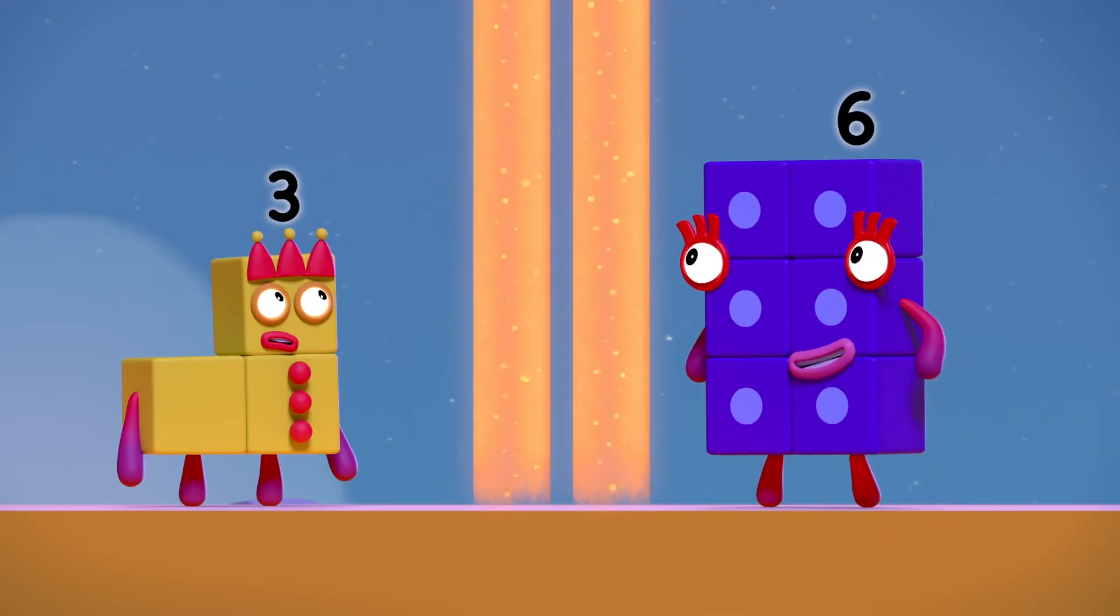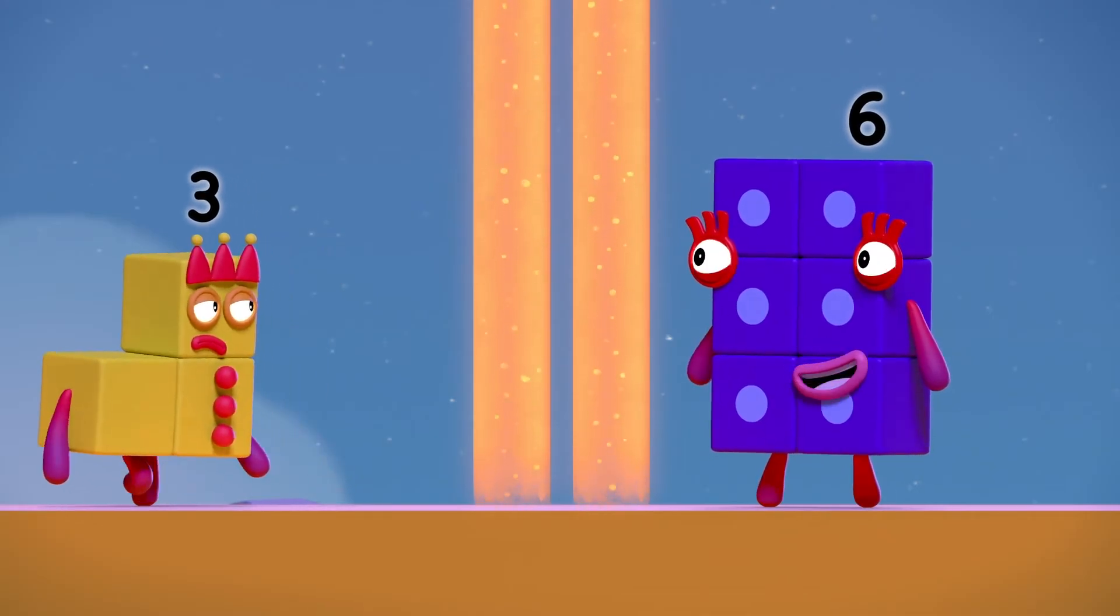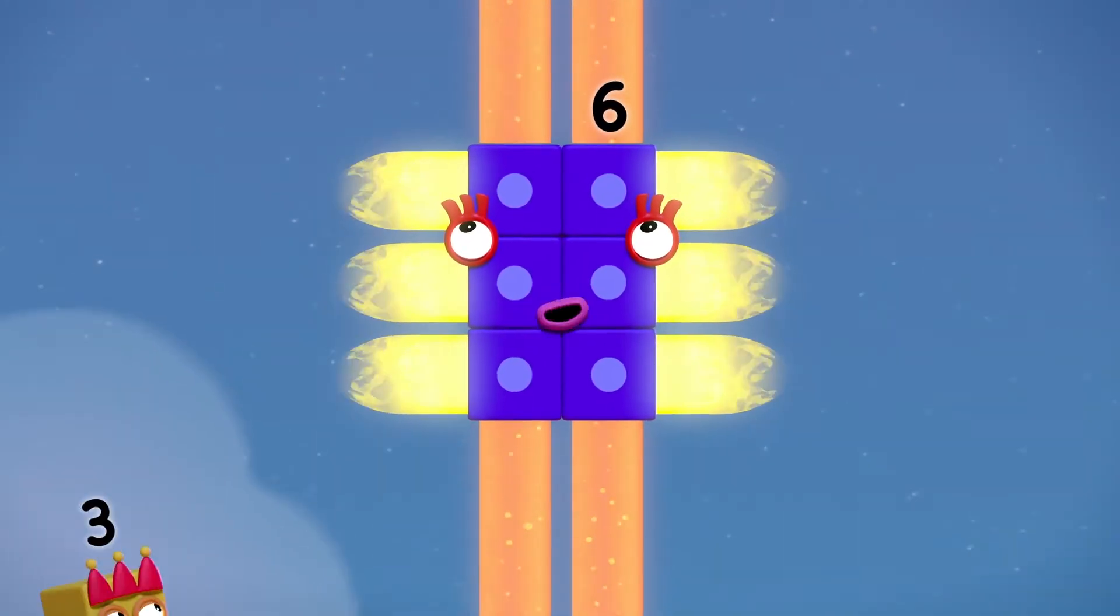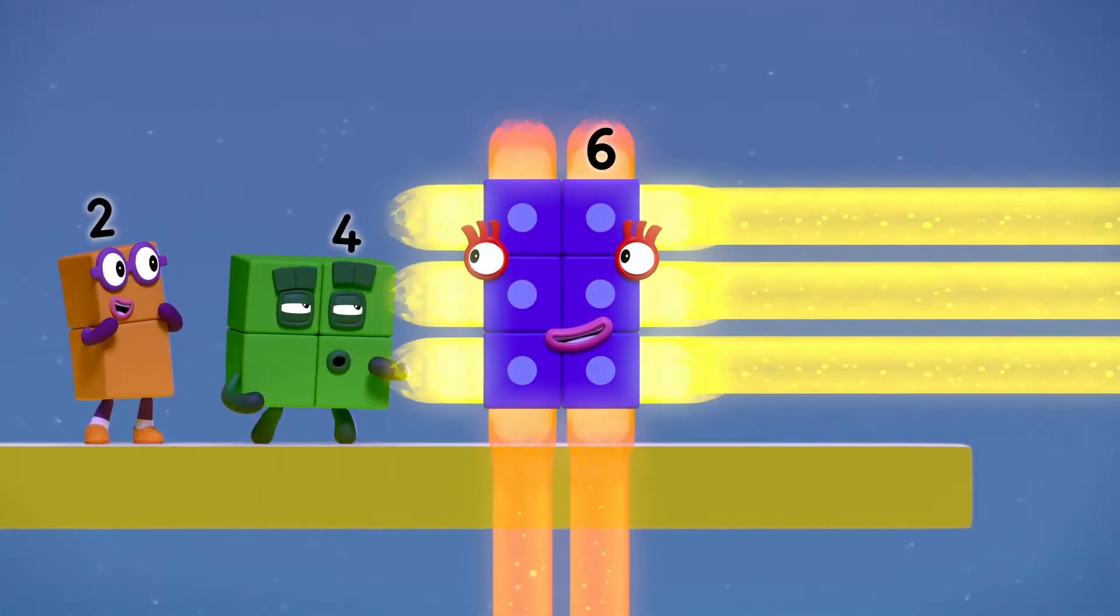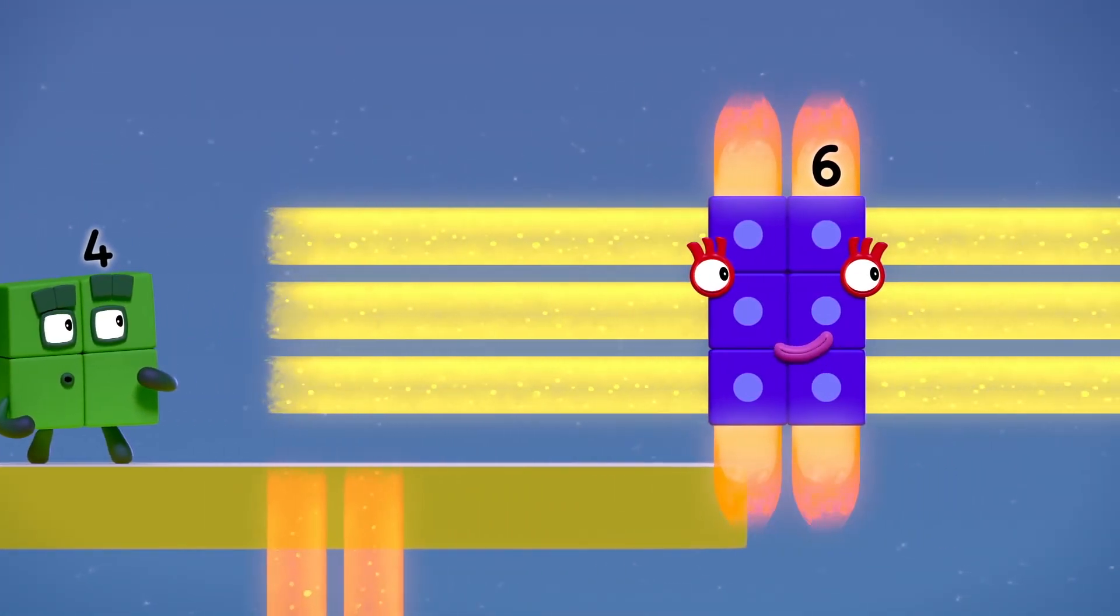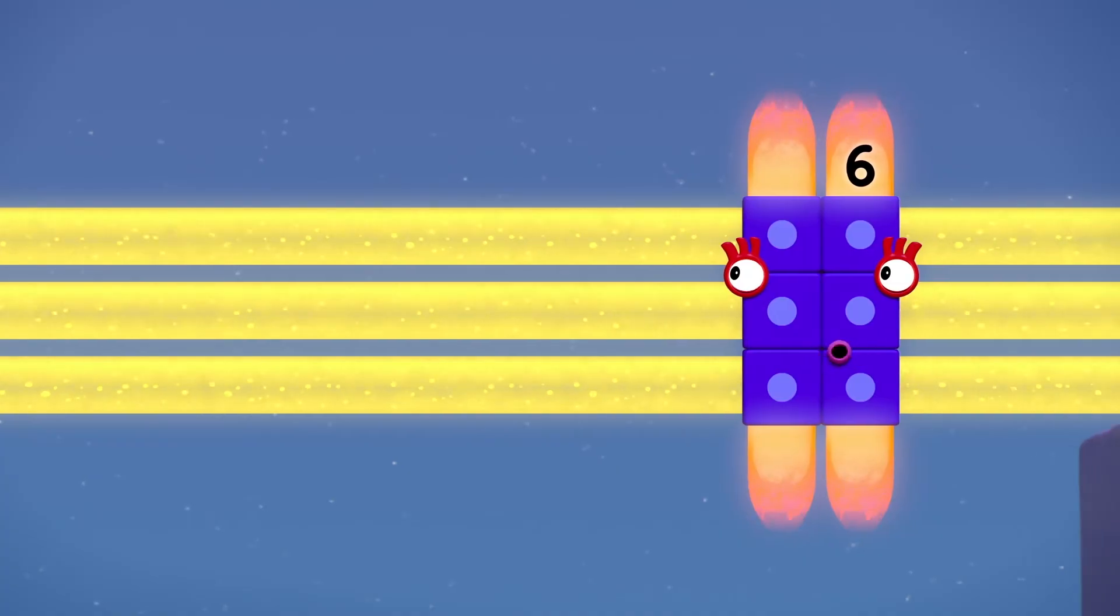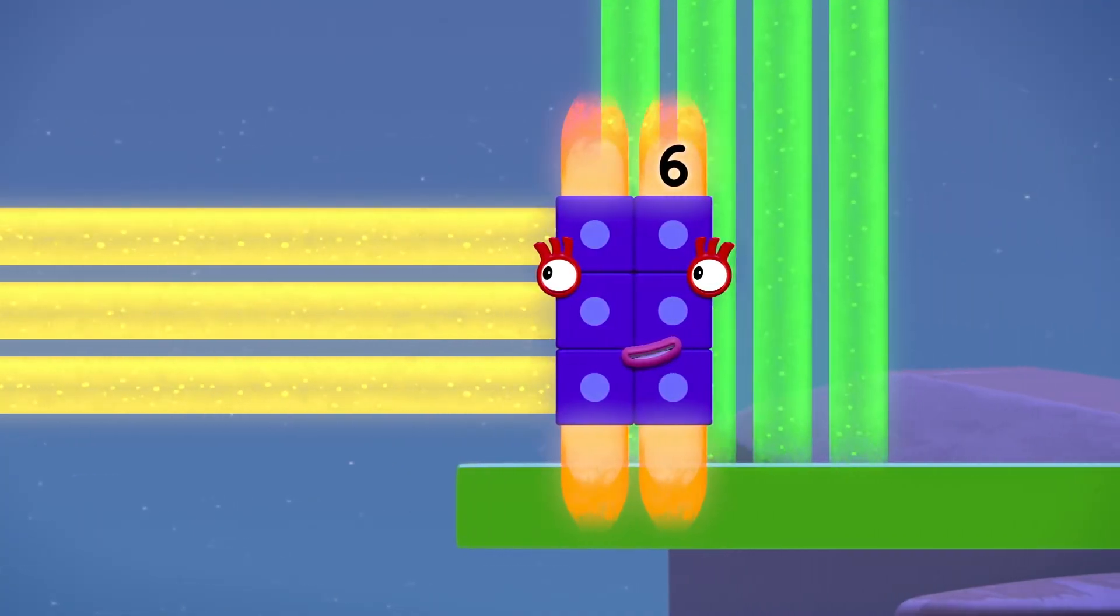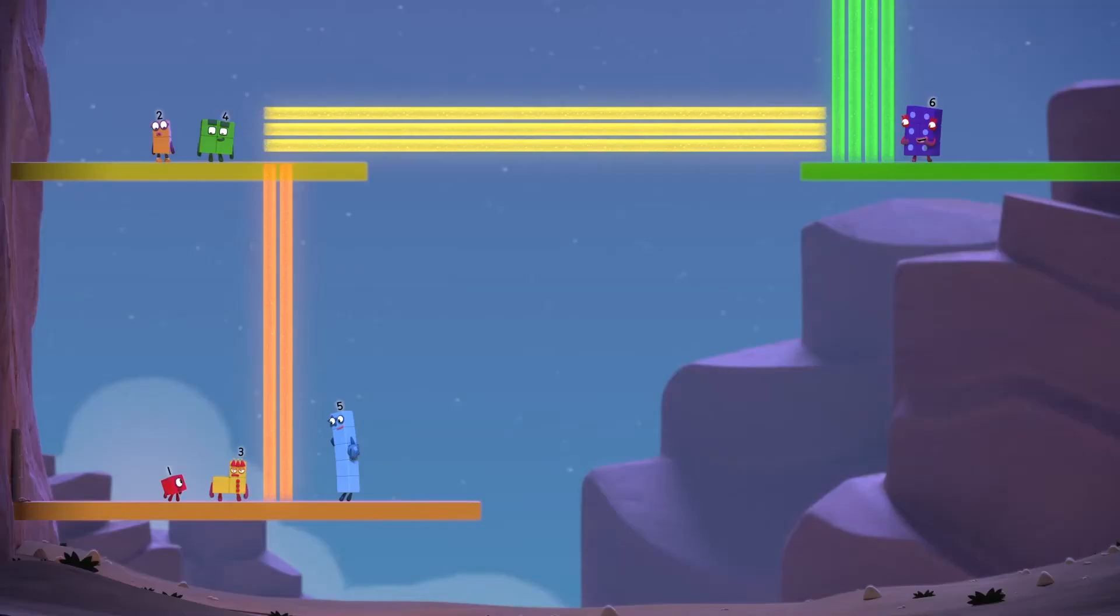If you think that ride is smooth, wait till you check out this move! I'm two lots of three! I've got two rays and three rays! I've got three rays too, you know! I could ride across just like six if I could get up there!